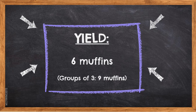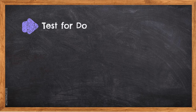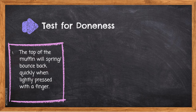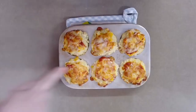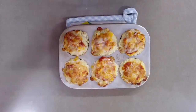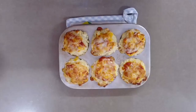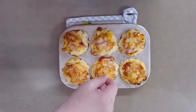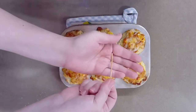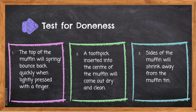The yield for this recipe is six muffins for groups of three, or nine muffins. Tests for doneness: one — the top of the muffin will spring back quickly when lightly pressed with a finger. Two — a toothpick inserted into the center of the muffin will come out dry and clean.